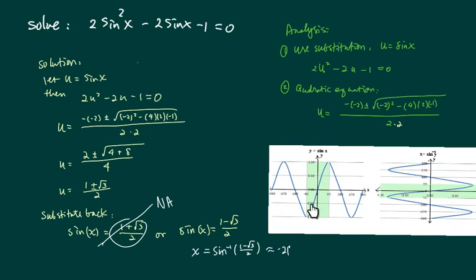So as you can see over here, the inverse of sine is defined from 90 degrees to minus 90 degrees. For our case here, x is roughly minus 21 degrees.